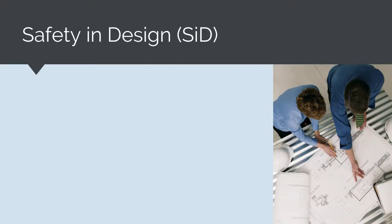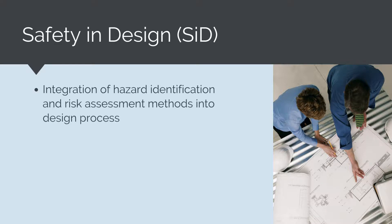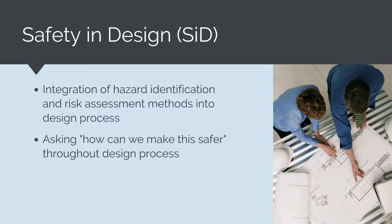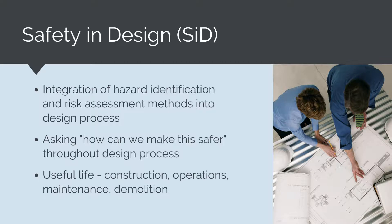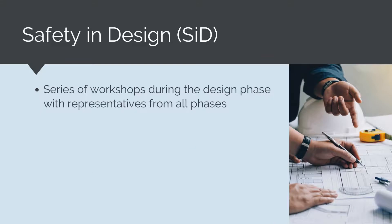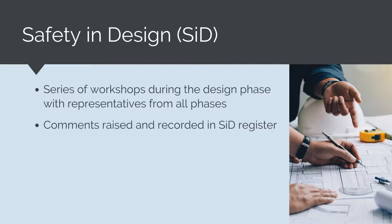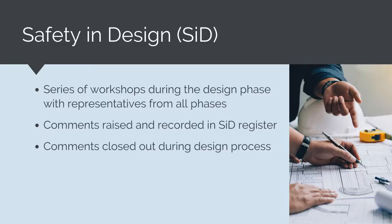Another important tool used to manage health and safety risks is the safety and design process. Safety and design is the integration of hazard identification and risk assessment methods early in the design process to eliminate or minimize the risks of injury throughout the life of the product being designed — in simpler terms, continually asking how we can make this safer during design. The useful life considered includes construction, operations, maintenance, and demolition. The process consists of a series of workshops during the design phase with representatives from all phases of the product lifecycle, where comments are raised, recorded in the safety and design register, and addressed through design development.